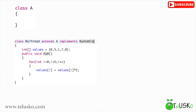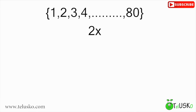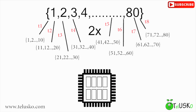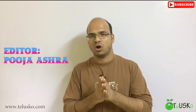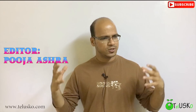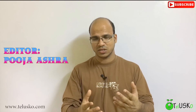For example, if you have 80 elements and want to double each one, instead of creating one thread you create eight threads on an octa-core machine. Each thread handles 10 elements: thread 1 handles elements 1–10, thread 2 handles 11–20, thread 3 handles 21–30, and so on. This consumes much less time compared to a single thread. Multi-threading is very important for software development, game development, and app development. In the next video we'll cover the practical implementation using the Thread class and the Runnable interface. Thank you!